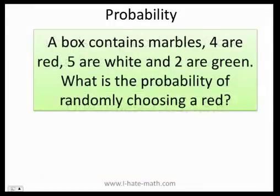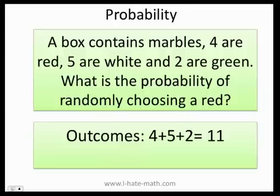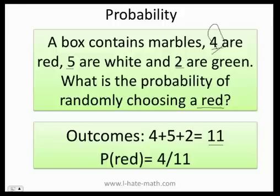Now, let's do something a little bit more complicated. A box contains marbles. 4 are red, 5 are white, and 2 are green. What is the probability of randomly choosing a red? Well, let's figure it out. How many outcomes do I have? Remember, the outcomes are all the possible choices that I can get. Well, I can get 4 red, 5 white, and 2 green. When I add that, I'm going to get 11 outcomes. Can you tell me how many reds I have? You guessed it. 4 out of 11. So, the probability of getting a red is just 4 marbles that are red over the whole 11.